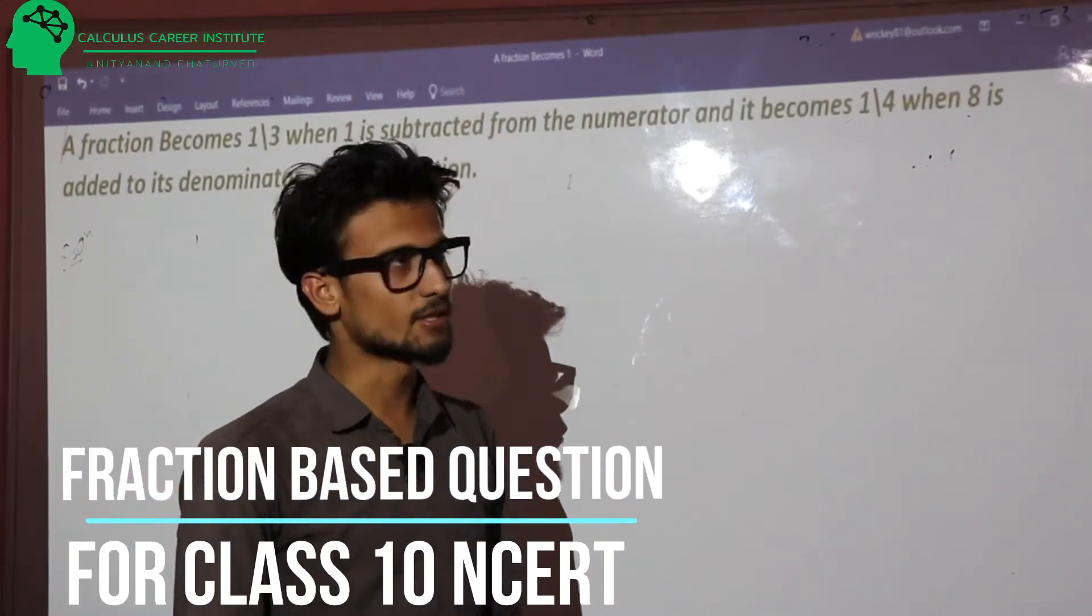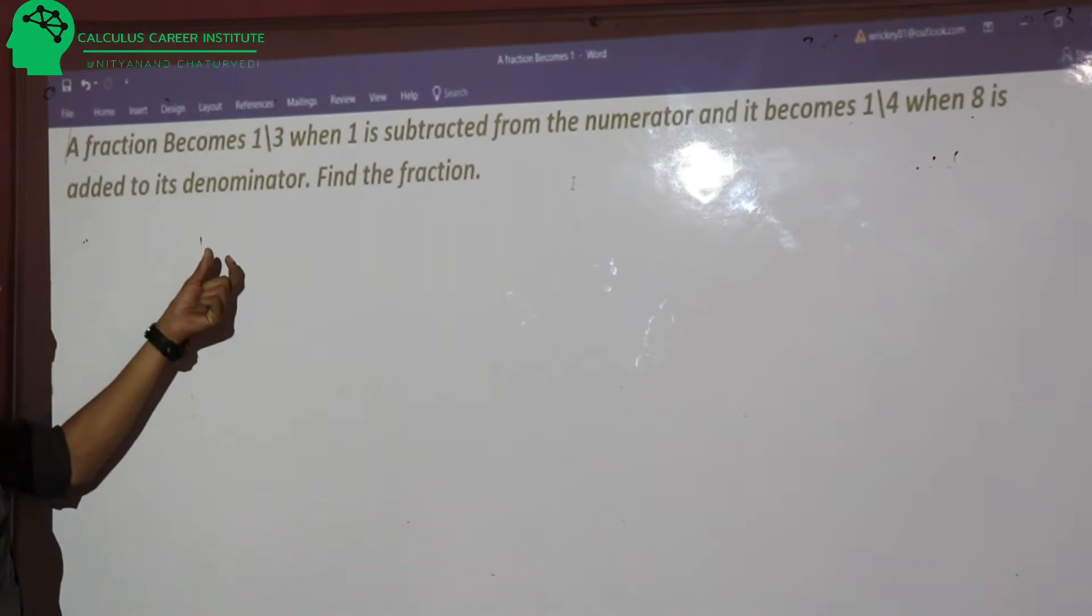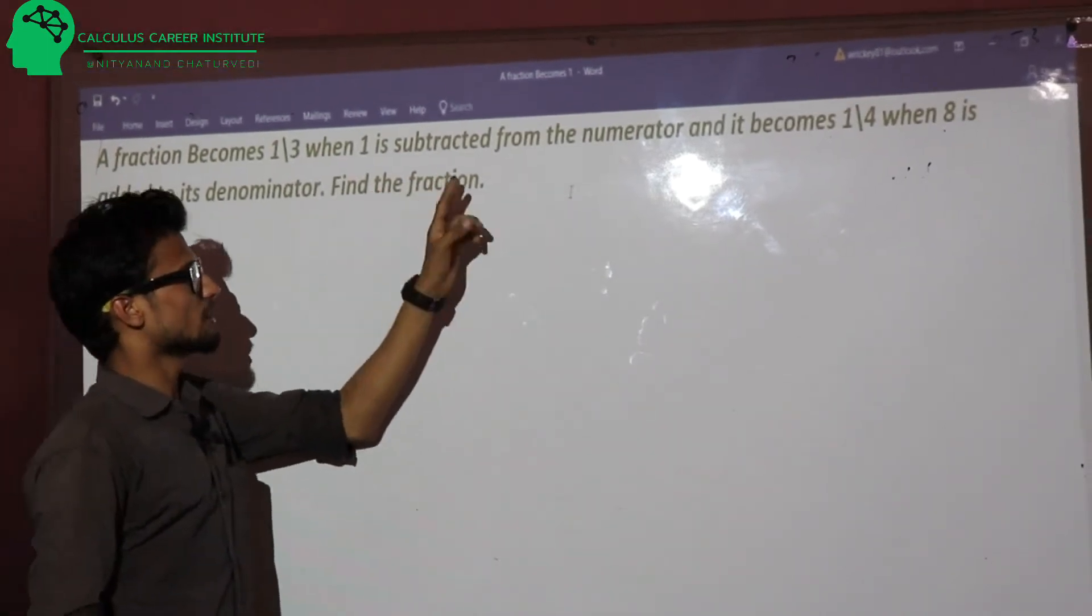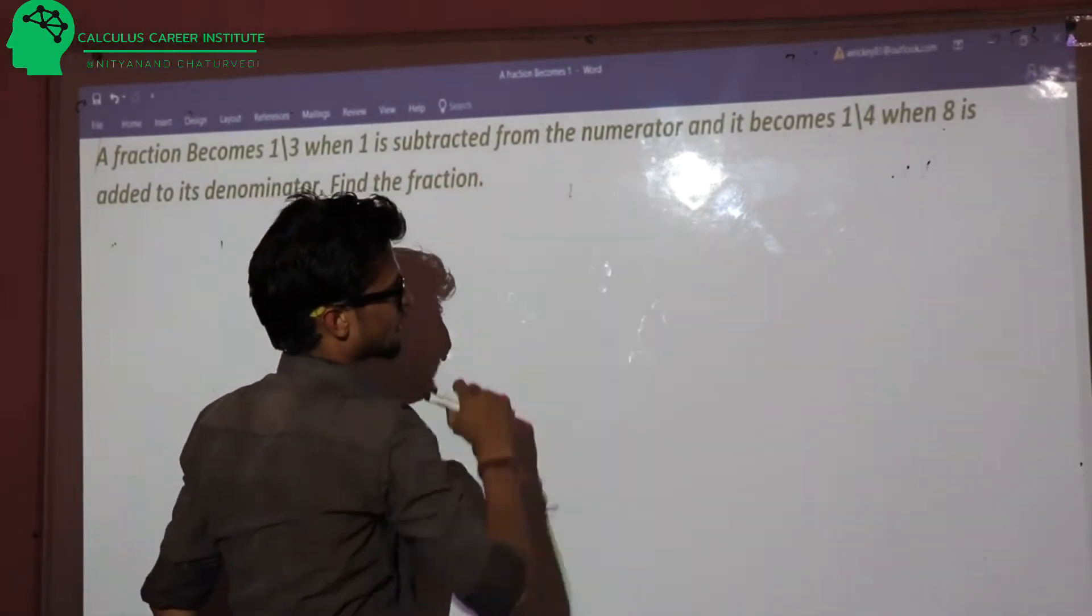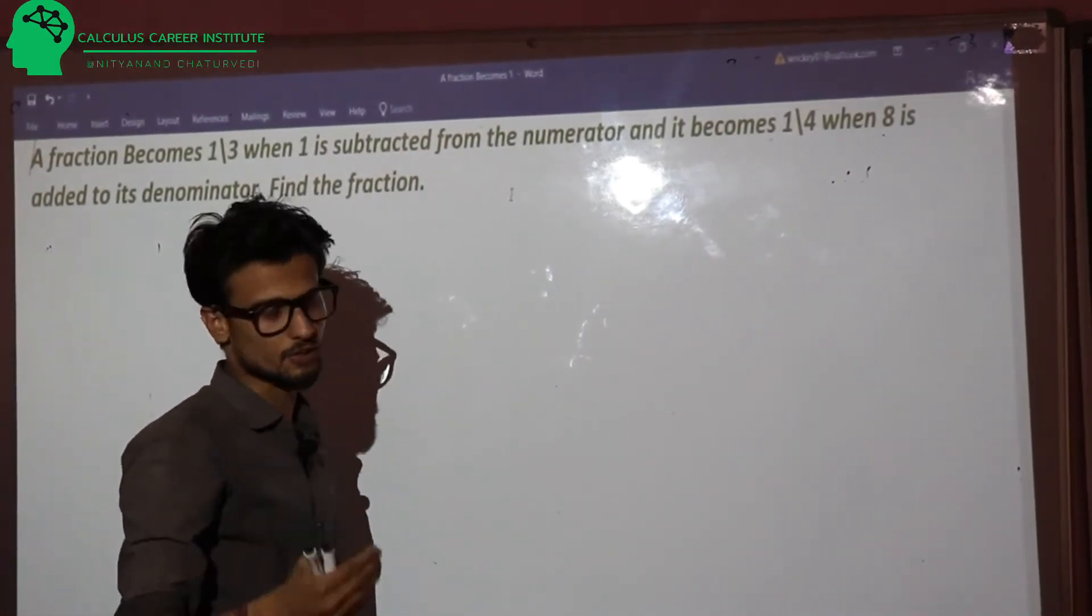The next question is a fractions related problem. The question has been given. The fraction becomes 1 by 3 when 1 is subtracted from the numerator. The denominator doesn't change. We have to subtract 1.